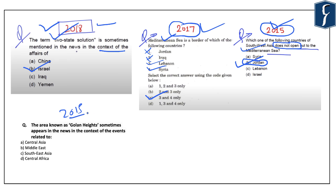In 2015, a question was asked: the area known as Golan Heights sometimes appears in news in the context of events related to — and as we have seen in today's map, it is related to the Middle Eastern region. This region is very important for us from the preliminary examination point of view, so do go through the maps of this region carefully and note the locations of important areas mentioned in the news. With this, let's take up the next news article.